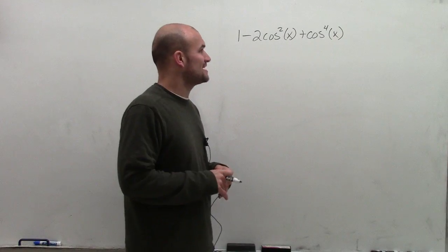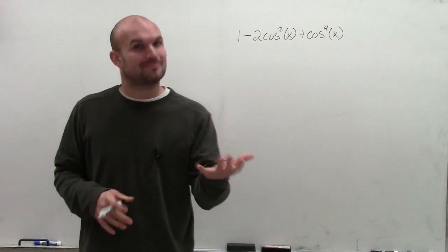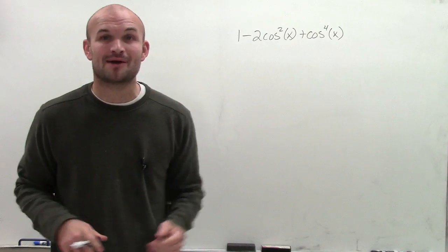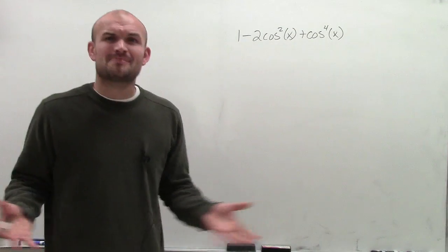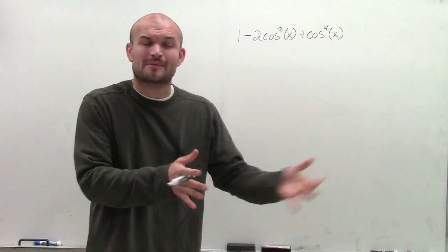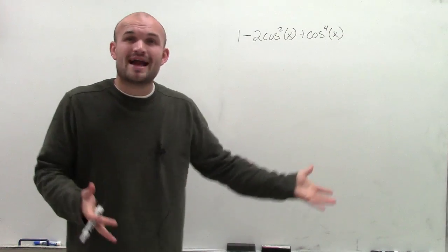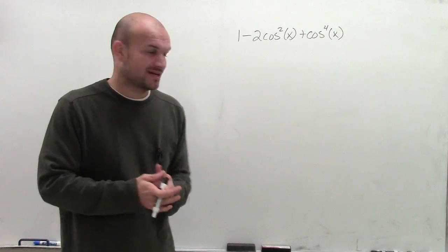1 minus 2 times cosine squared of x plus cosine to the fourth of x. I'm pretty sure you're thinking, alright, let's get this problem going. A lot of the problems so far have been just using trigonometric identities, but now we have to use factoring and then use our trigonometric identities.